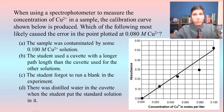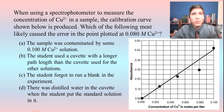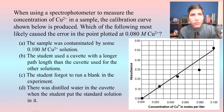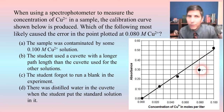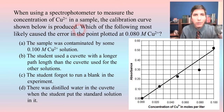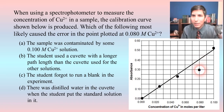Very often they'll ask these questions in a multiple choice format. When using a spectrophotometer to measure the concentration of copper two ions in a sample, the calibration curve shown below is produced — but it looks like there's something wrong with it. Which of the following most likely caused the error in the point plotted at 0.08 molar copper two? That dot really should be somewhere higher up on the line, but somehow it got off — it's too low.